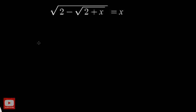Hello everyone. In this video we are going to solve another radical equation. The equation is square root of 2 minus square root of 2 plus x, equal to x. Before we proceed to the solution, I would strongly advise you to give this problem a try on your own and come back to watch this solution. If you enjoy my content, kindly subscribe to my channel and hit the like button.